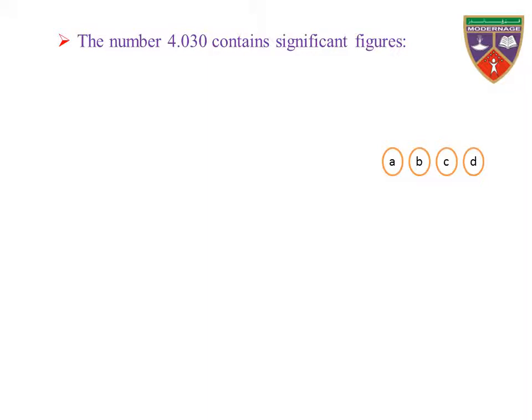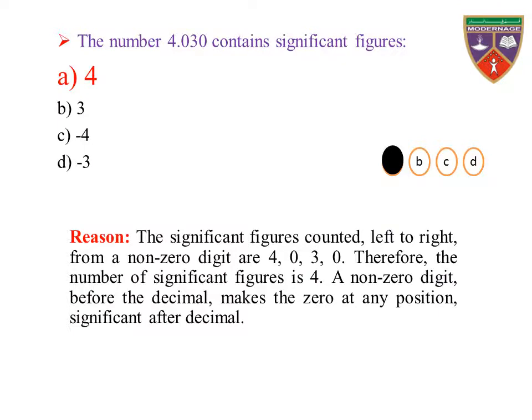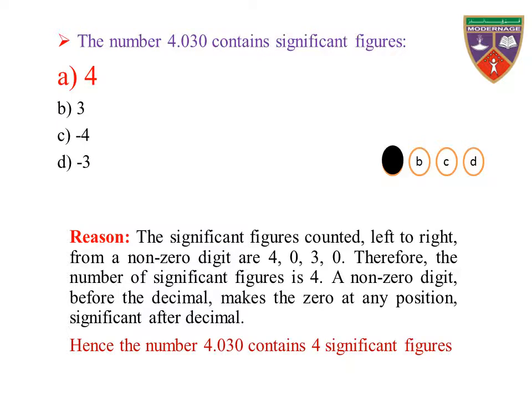The number 4.030 contains significant figures — A: 4, B: 3, C: −4, D: −3. The key is 4, therefore the correct option is A. Reason: the significant figures counted left to right from a non-zero digit in 4.030 are 4, 0, 3, 0. Therefore, the number of significant figures is 4. A non-zero digit before the decimal makes the 0 at any position significant after the decimal. Hence, the number 4.030 contains 4 significant figures.